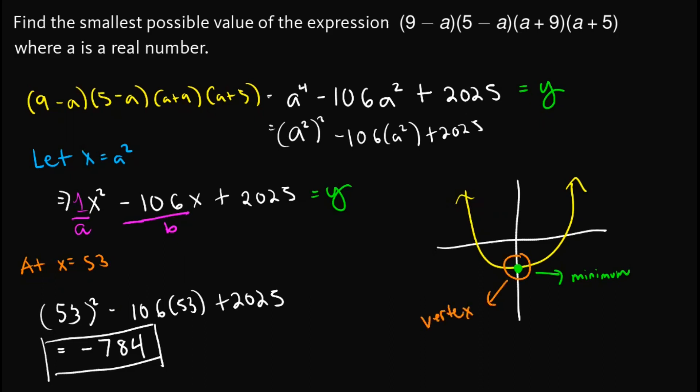And just recall that the formula for vertex is to let x equal negative b over 2a. Then substitute this x value to get the y value, which is equal to our expression.